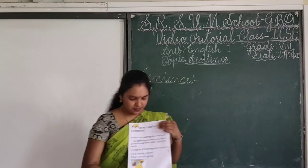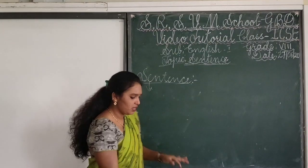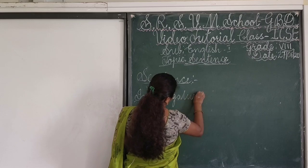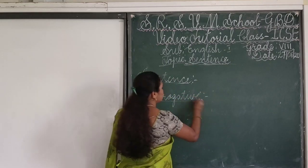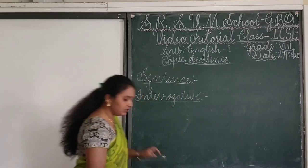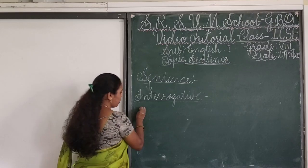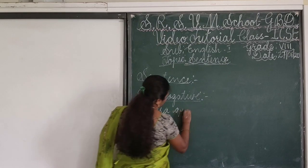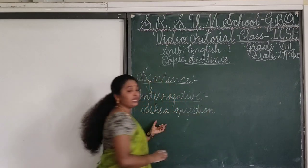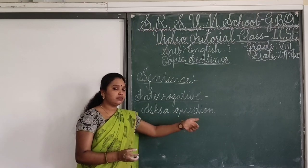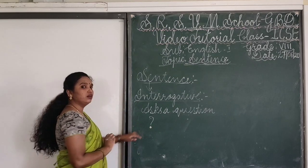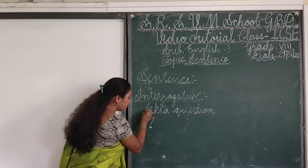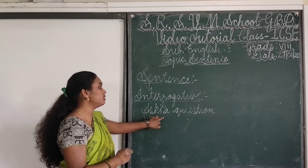Let me go on to the next sentence — it's an interrogative sentence. What is an interrogative sentence? An interrogative sentence asks a question. So, an interrogative sentence will always ask a question and it will always end with a question mark. An interrogative sentence asks a question and always ends with a question mark to show that it is a question.